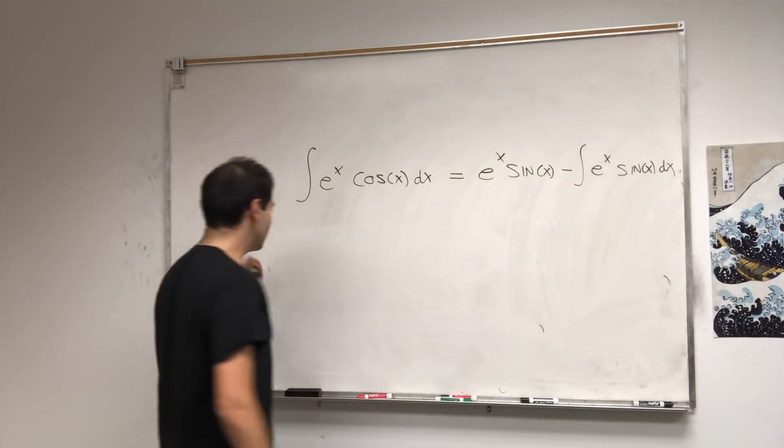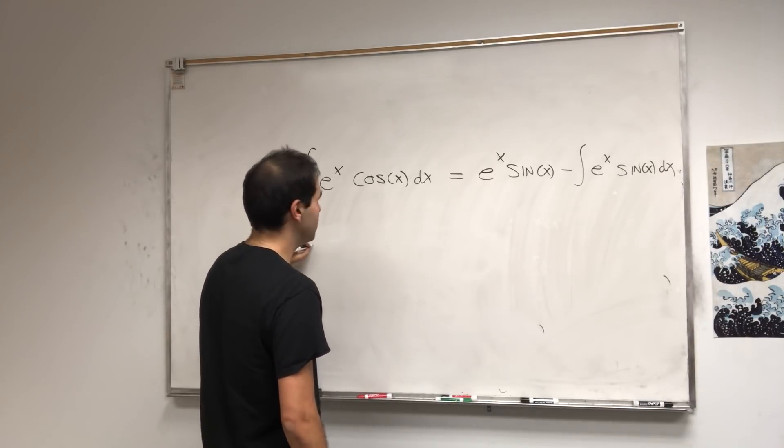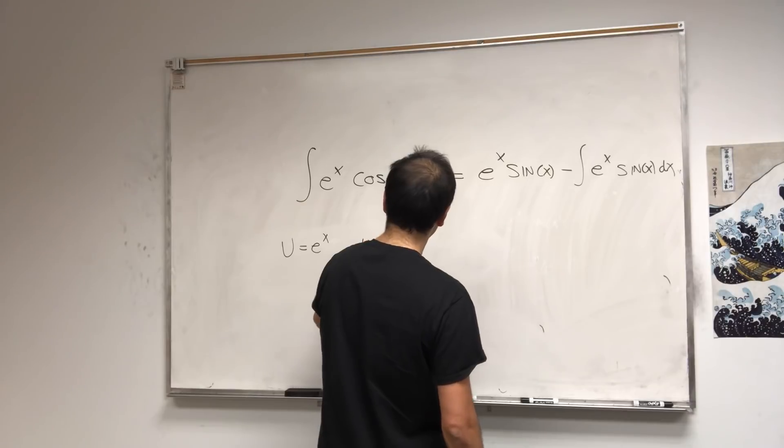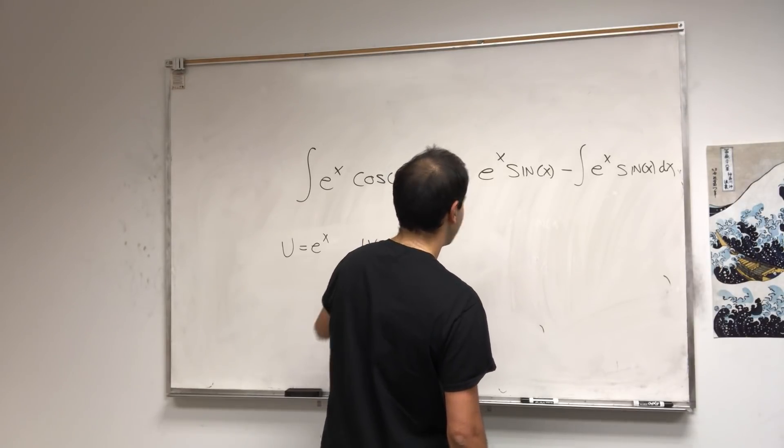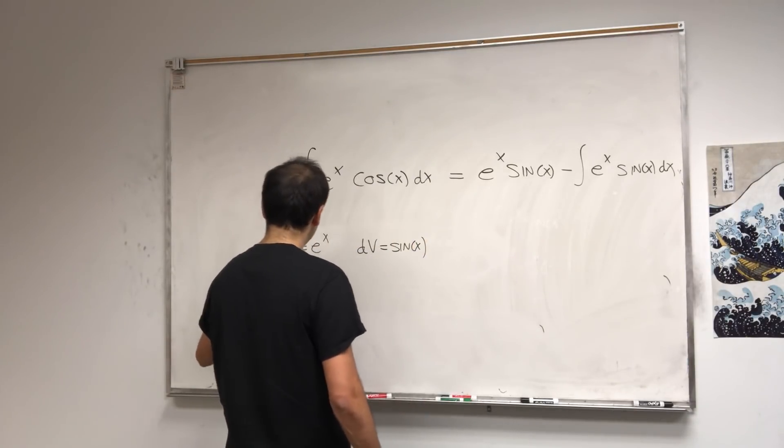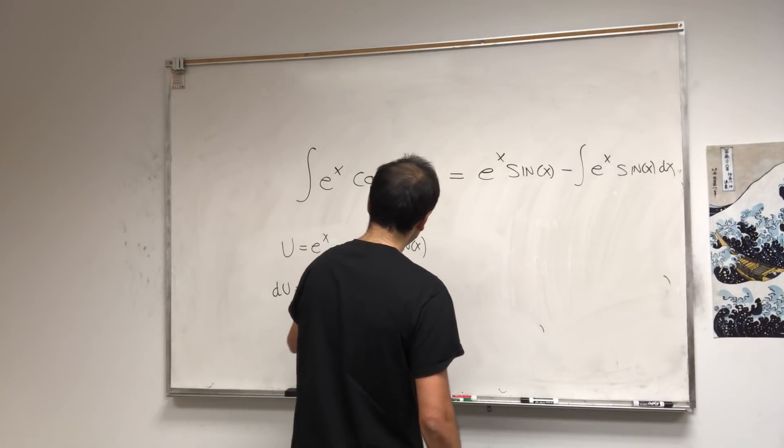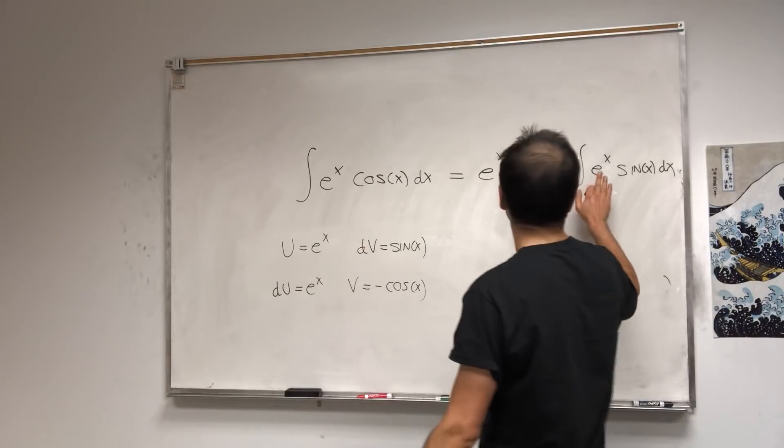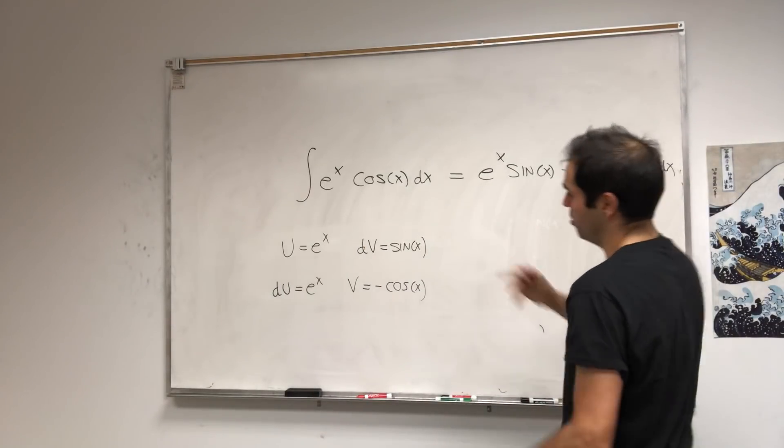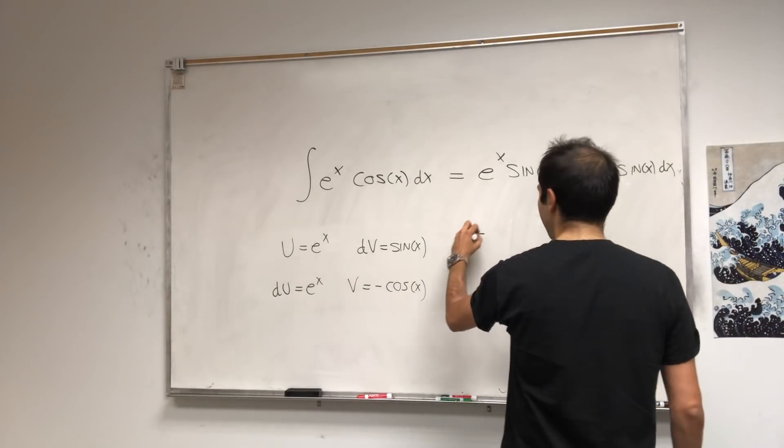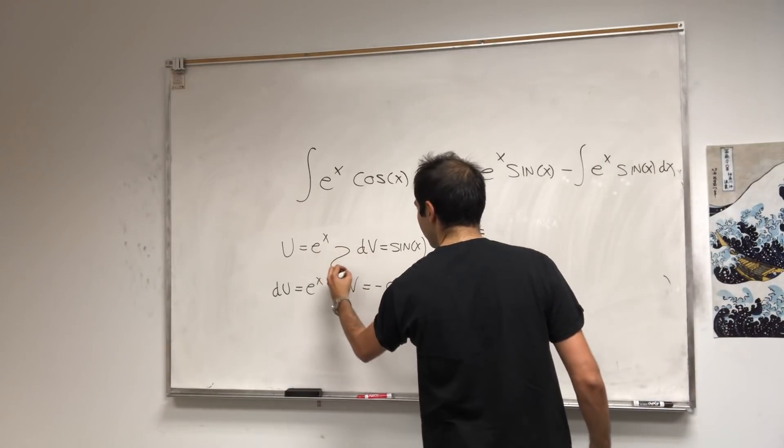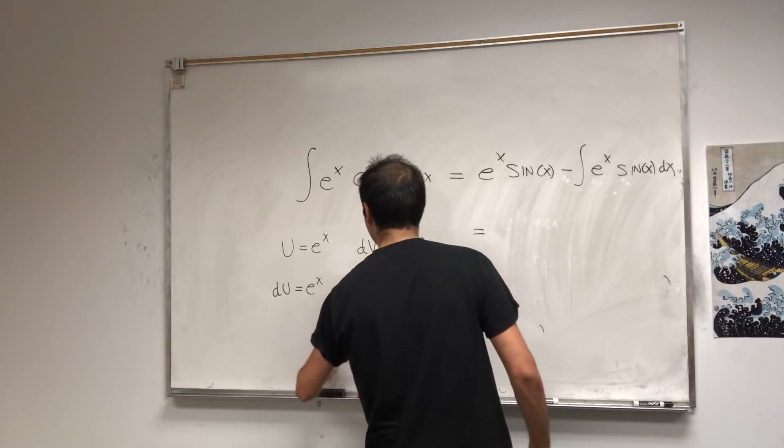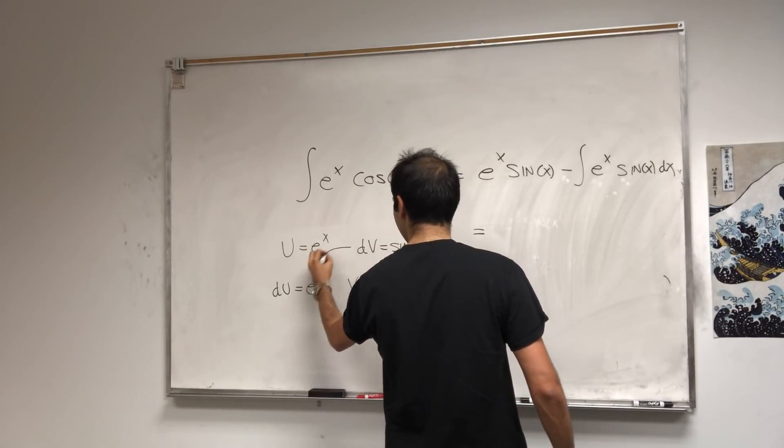Let's do this again. So now u is e^x, and dv is sin(x). Then du is e^x, and v is minus cos(x). If you want, you can also put this minus here and it becomes cos(x), but then you go through the zigzag motion.